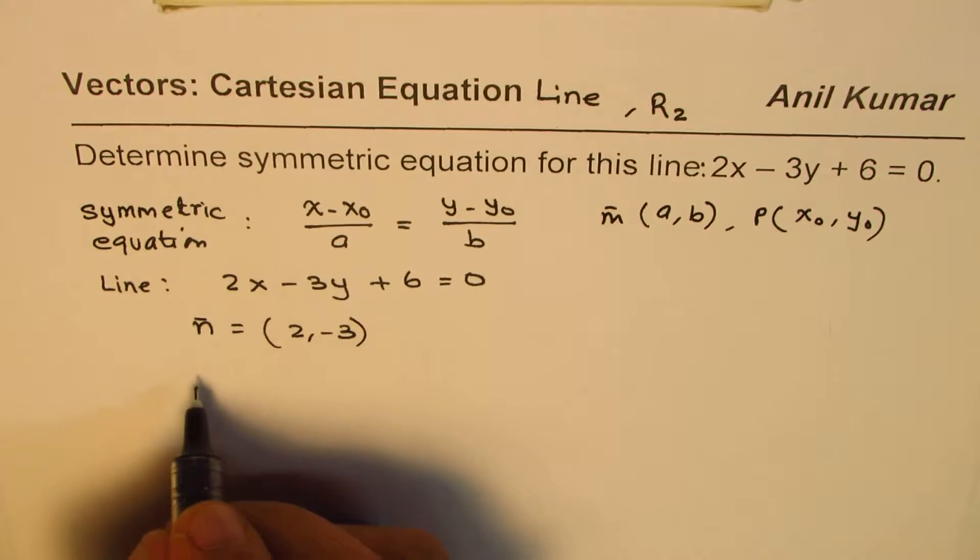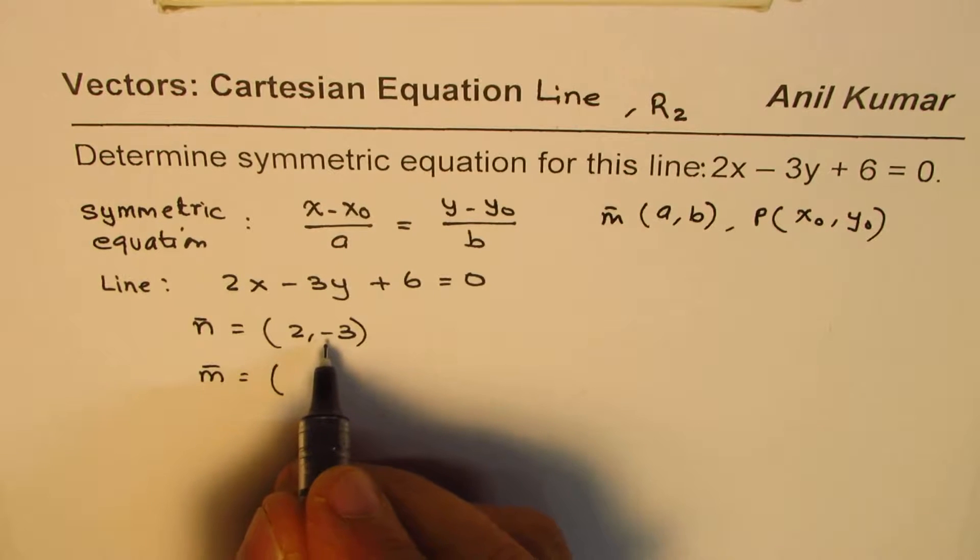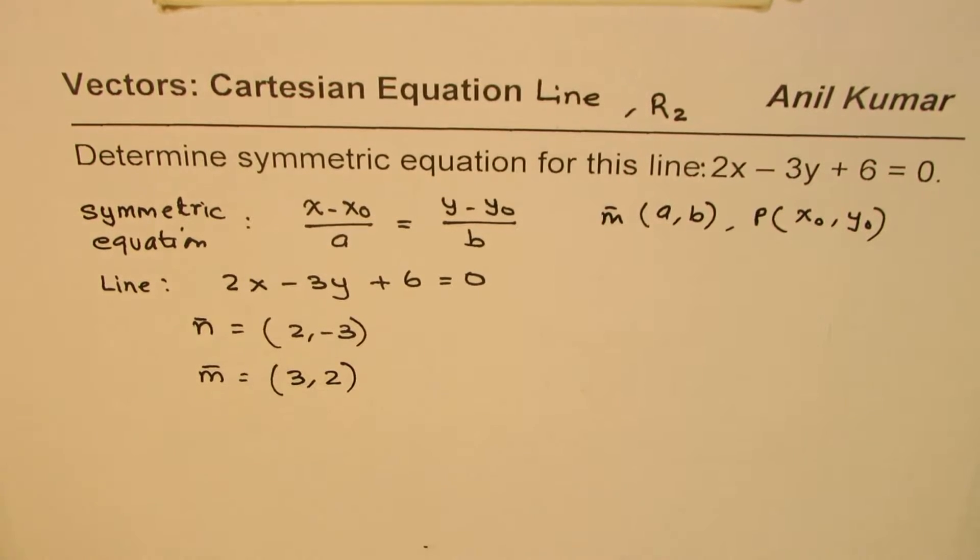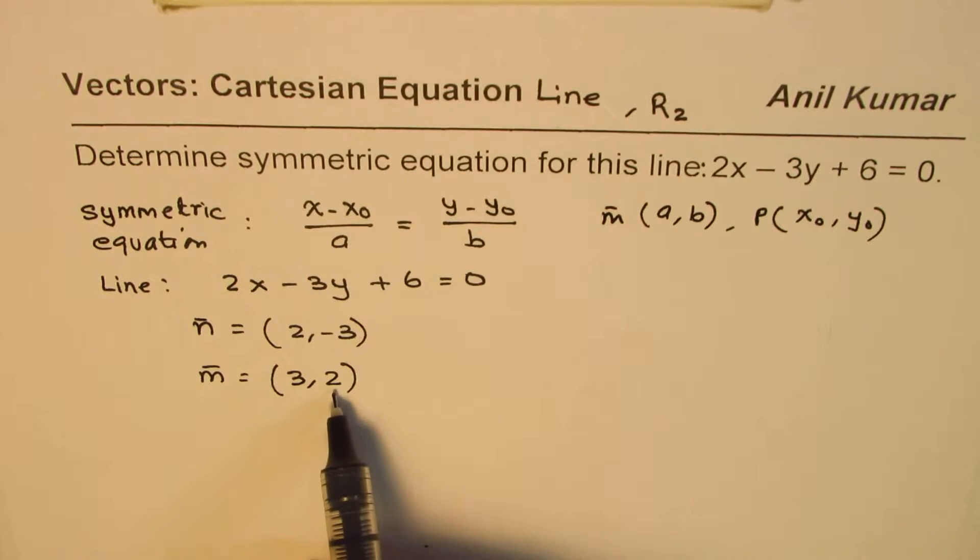So, from this normal, we can find the direction by reversing these and changing one of the signs. So, we'll change this sign of minus. So, we'll write 3, 2 as the direction. So, we got one part. That means our a and b are known as 3 and 2 for us.